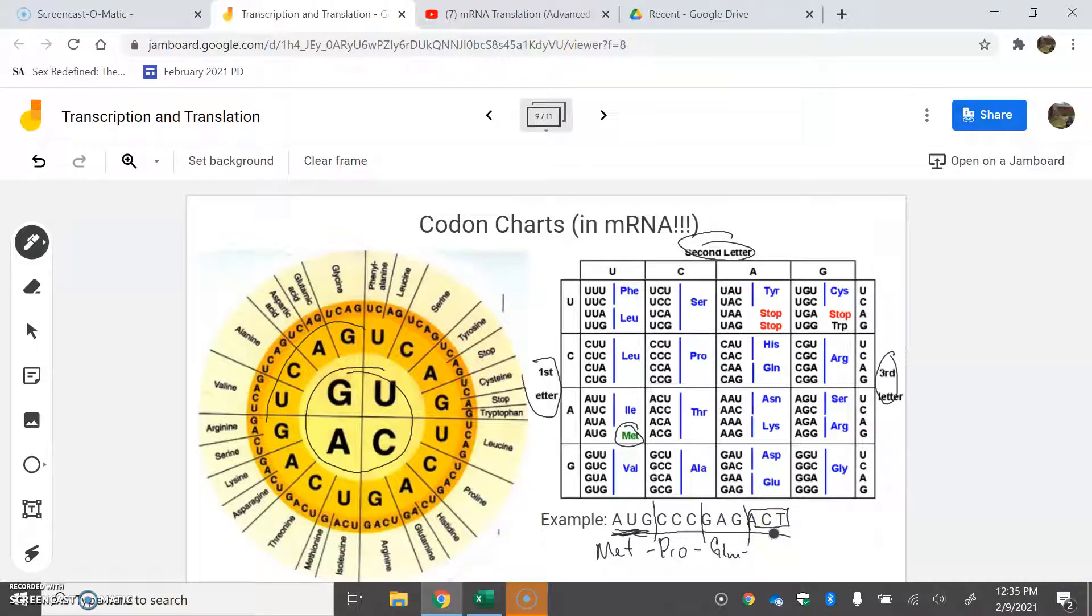That should be our mRNA would be UGA here. Sorry, UGA. Well, what does UGA give us? U, G, A says stop. So there's our terminal sequence, our termination sequence.